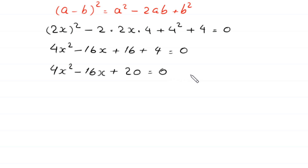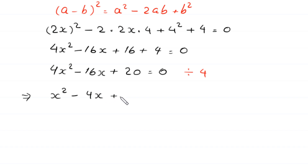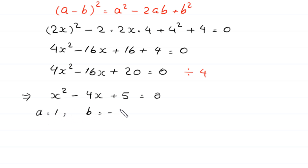Now, if we divide both sides of this equation by 4, then this implies that x squared minus 4x plus 5 is equal to 0. This is a quadratic equation and is not factorable, so we solve it by the quadratic formula. In this equation, a is equal to 1, b is equal to negative 4, and c is equal to 5.